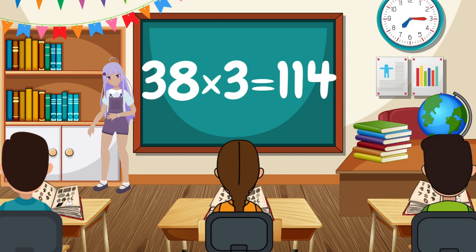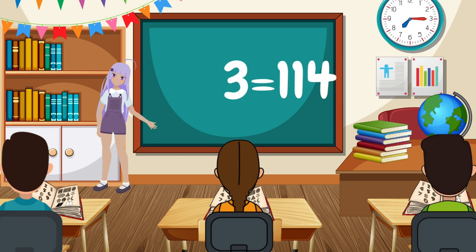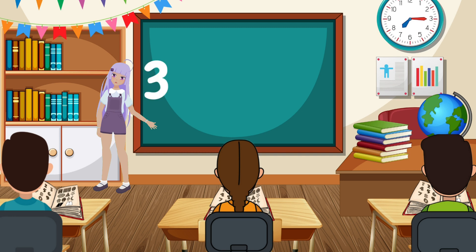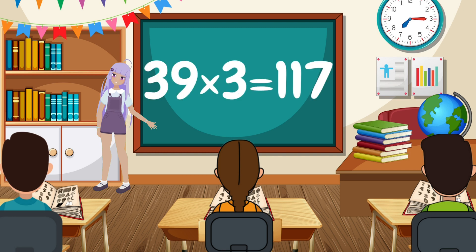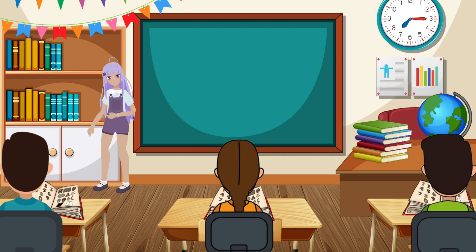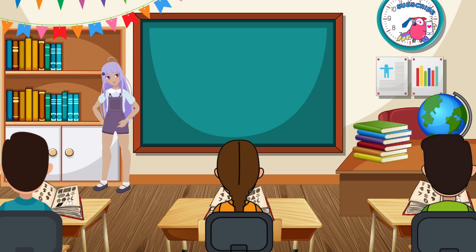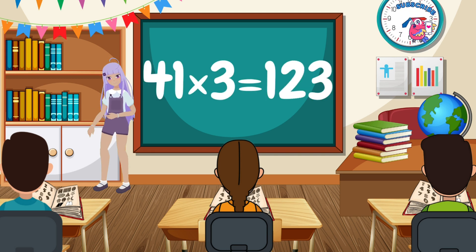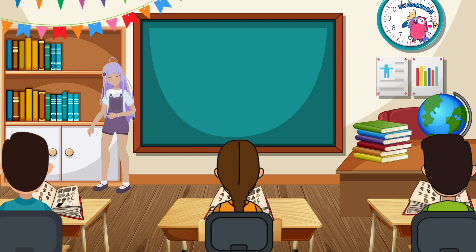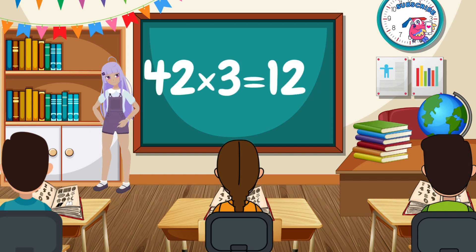39 x 3 equals 117. 40 x 3 equals 120. 41 x 3 equals 123. 42 x 3 equals 126.